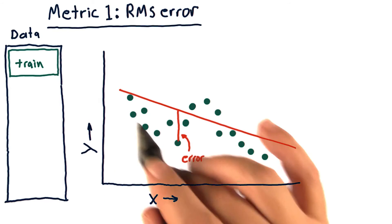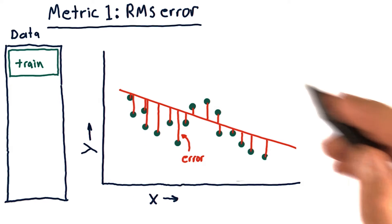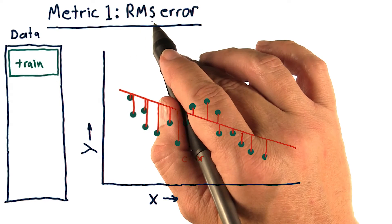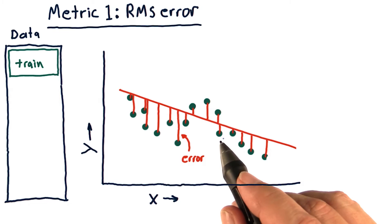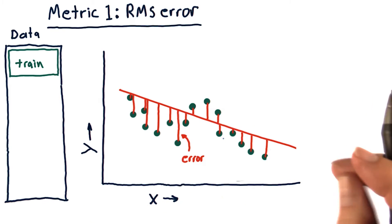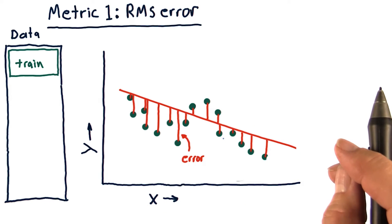Now we've got an error at every single one of these data points. And what we do to measure root mean squared error is to take the error at each one of these points, square it, add them together, take the average, and take the square root of that.